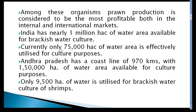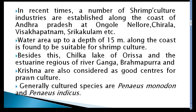There is a lowland area of 75,000 hectares of water area available for culture practices. The coastal line is 970 kilometers, with 150,000 hectares of water area available for culture practices, and 9,500 hectares of water area useful for aquaculture practices. In recent times, shrimp culture industries have grown along the Andhra Pradesh coastal line.